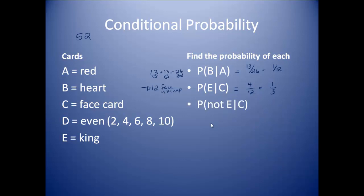Another one: probability of not E given C. We're picking from those 12 face cards again, but this time we want not a king. There are 4 kings, so 12 minus 4 is 8 — there are 8 other face cards. So I would have 8 out of 12, which reduces down to 2 thirds.